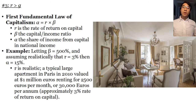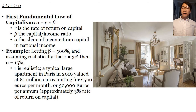Having introduced this formalism, Piketty introduces what he calls the first fundamental law of capitalism: alpha is equal to R times beta, where R is the rate of return on capital, beta is the capital income ratio, and alpha is the share of income from capital in national income. As a concrete example, letting beta equal 500% and assuming realistically that the rate of return on capital is about 3% per annum, then alpha equals 15%. A typical large apartment in Paris in 2010 is valued at 1 million euros and typically rents for 2,500 euros per month, or 30,000 euros per annum — approximately a 3% rate of return on capital.